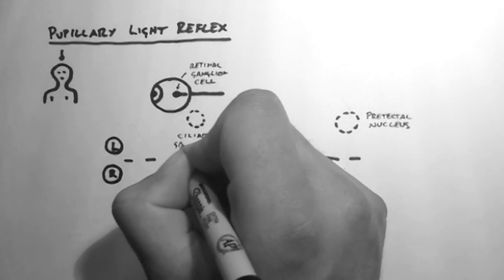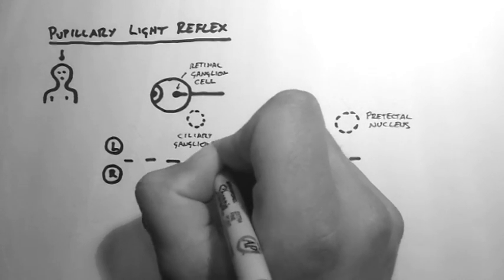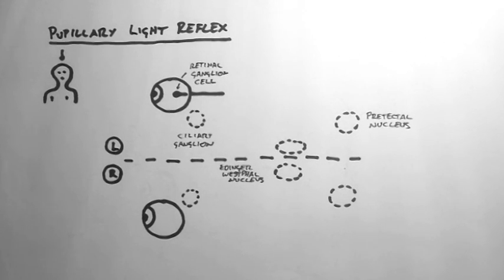These are the ciliary ganglia. And they, because they are ganglia, are located outside the CNS.